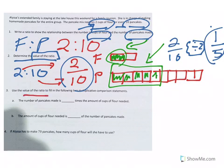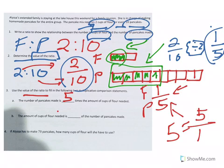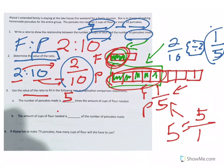Okay, jumping down here to number three. Use the value of the ratio, so we're looking at one-fifth, to fill in the following two multiplicative comparison statements. It sounds complicated. It's really asking you for the value. Number of pancakes is how many times the number of cups of flour. Well, we know if we're looking at one-fifth, that was flour to pancakes. So if it's asking for pancakes first, we've got to flip it. That would be five to one. Five over one, we know, is just five. So the number of pancakes made is five times the amount of cups of flour needed. Because again, if you're going to use one cup, and that's going to make five, one times five gives you five. So the number of pancakes is five times the amount of cups of flour needed. If we look at our original ratio, which was two to ten, two times five is ten. So it's, again, five times greater.